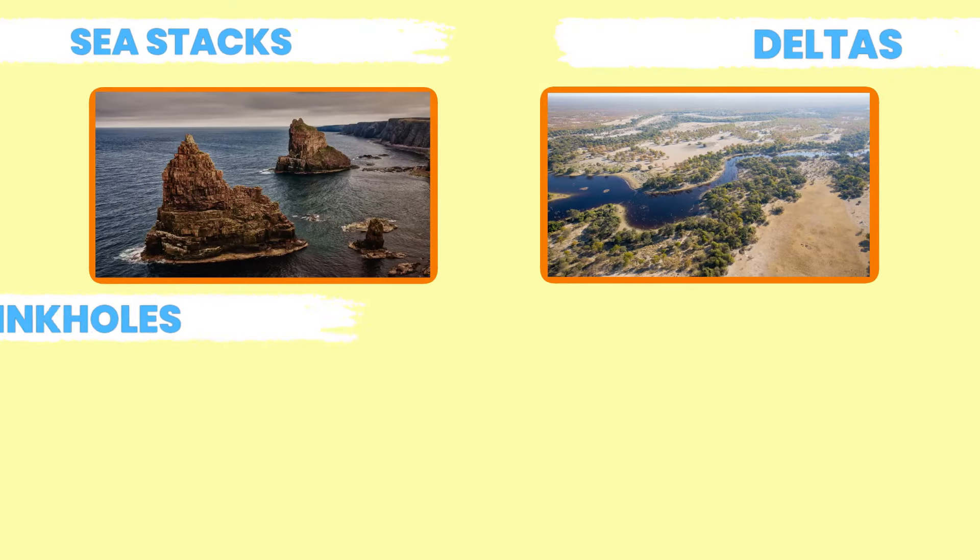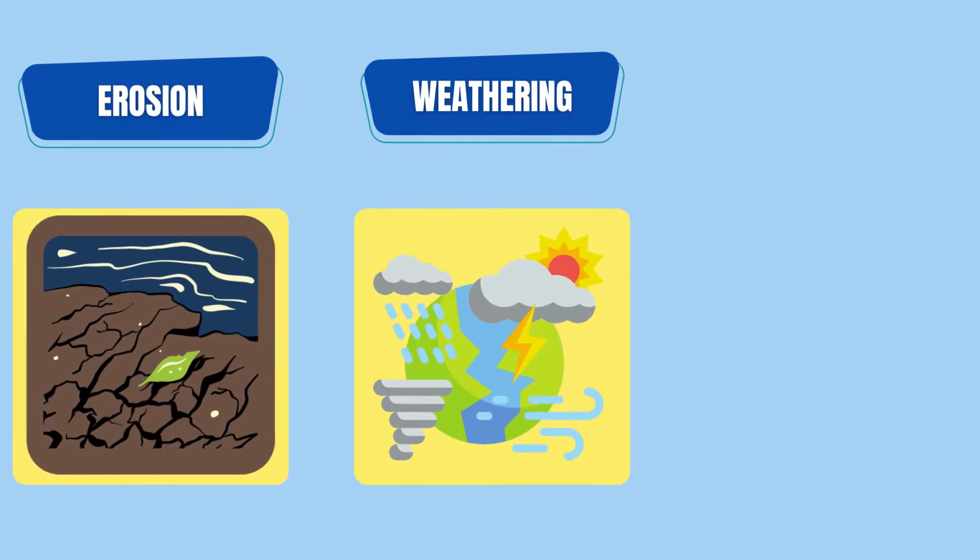What do sea stacks, deltas, sinkholes, and the Grand Canyon all have in common? They're all landforms shaped by erosion, weathering, and deposition.